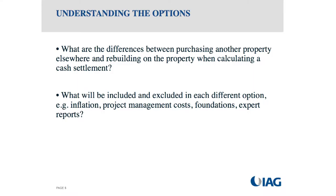What will be included or excluded in each option? I'm talking about IAG settlements specifically. Each settlement is a separate negotiation and some items will be included or not depending on intention and the conversation. Inflation may be included from the time of assessment to settlement. Project management costs depend on what you're going to do — if you go with a group home builder like Orange Homes or Golden Homes, they have project managers, so we probably wouldn't include additional project management fees. If you use a builder without a project manager, we may include those fees.